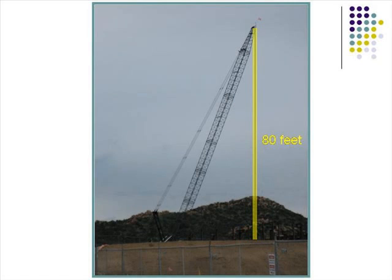The length of the hook line is 80 feet from the top of the crane to the ground. The distance from the base of the crane to the hook line is 39 feet.